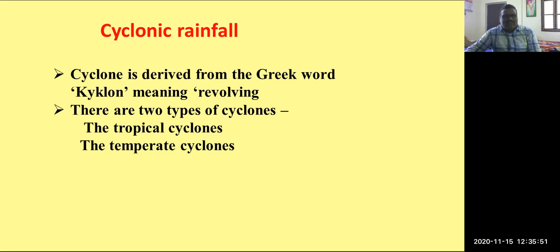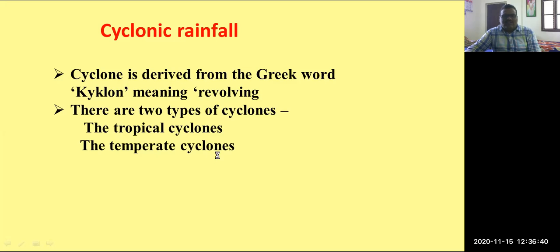Cyclonic rainfall is of two types. The first one is tropical cyclones, and the second one is temperate cyclones. Tropical cyclones are cyclones which occur in between the tropical zone, in between the Tropic of Cancer and the Tropic of Capricorn, particularly in the sea coasts of tropical continents. Temperate cyclones are cyclones which occur in the temperate zone, in between 35 degrees and 60 degrees. The important type which affects the world is tropical cyclones.